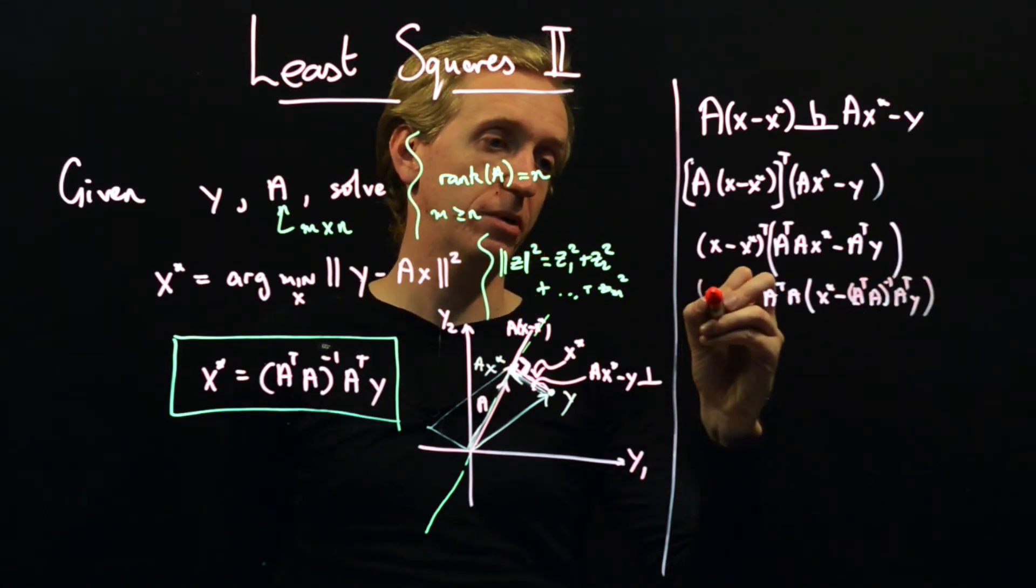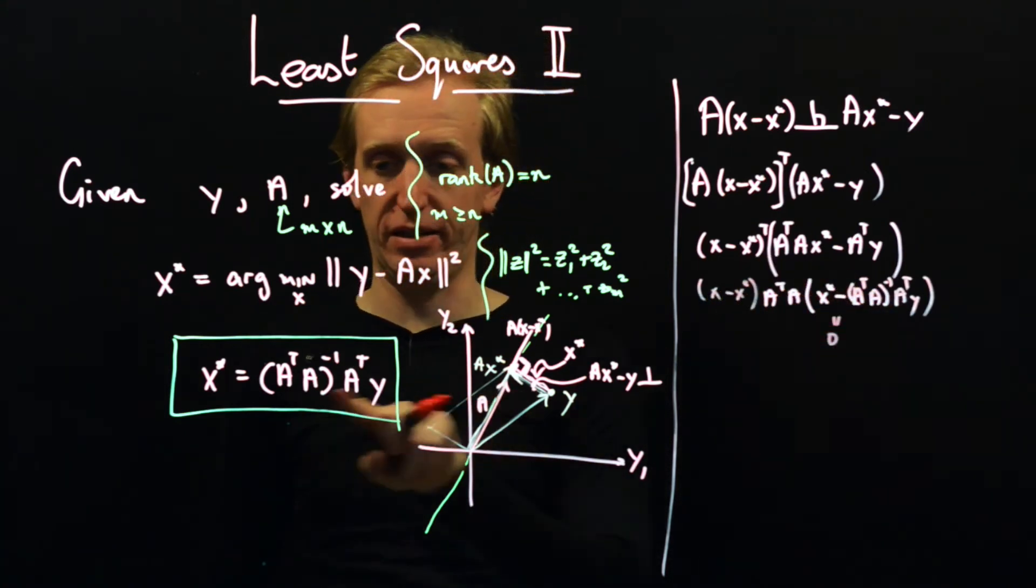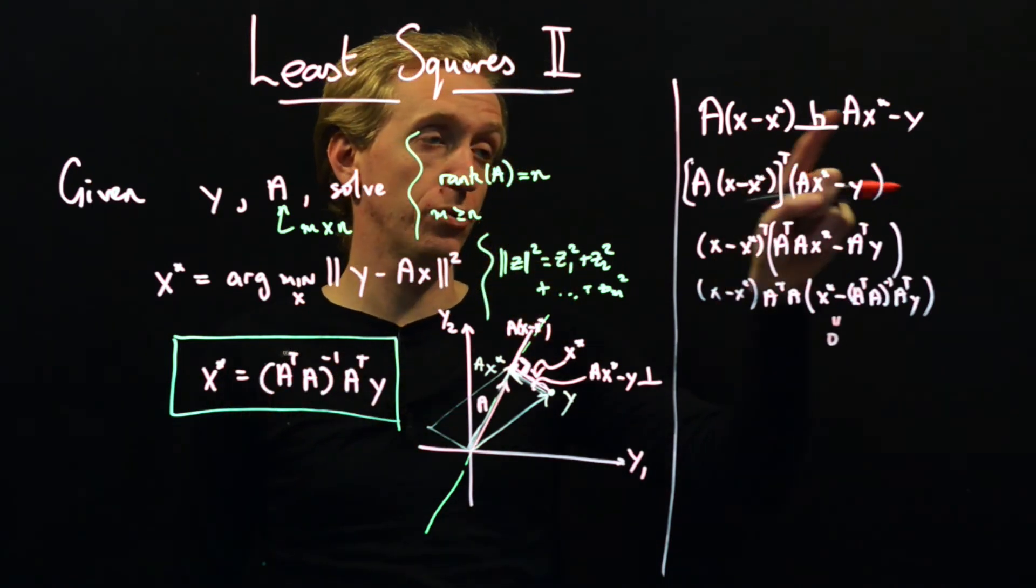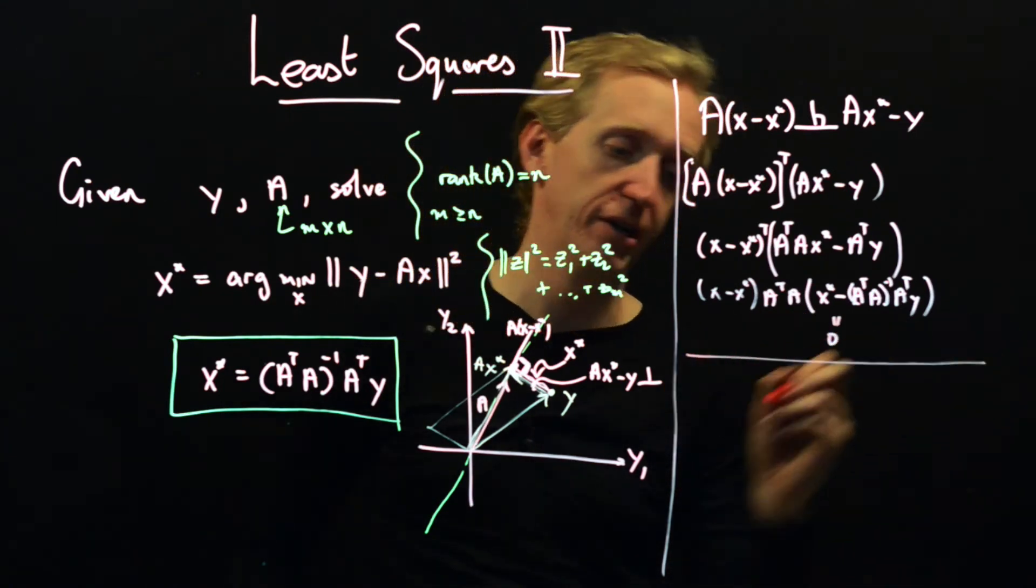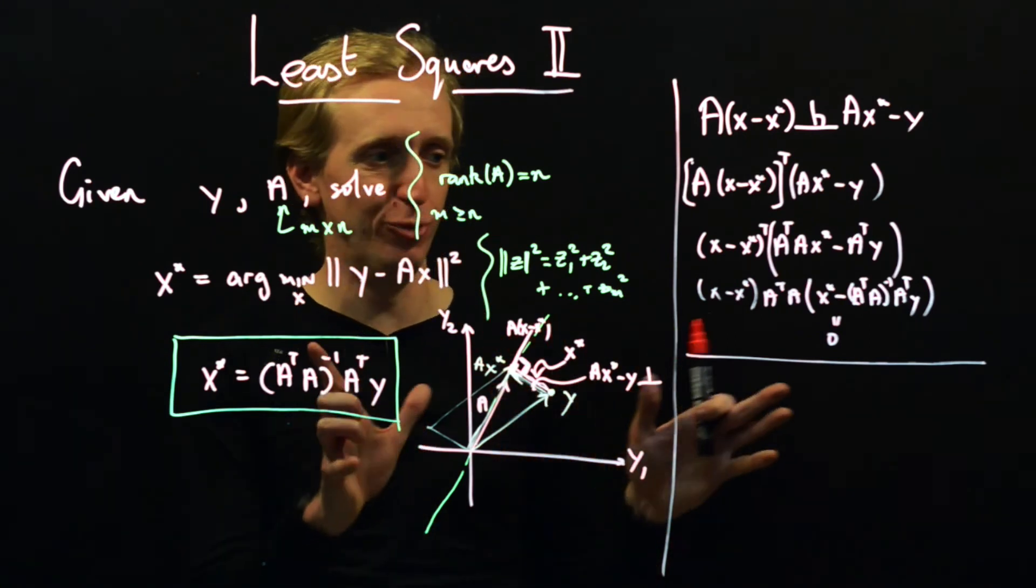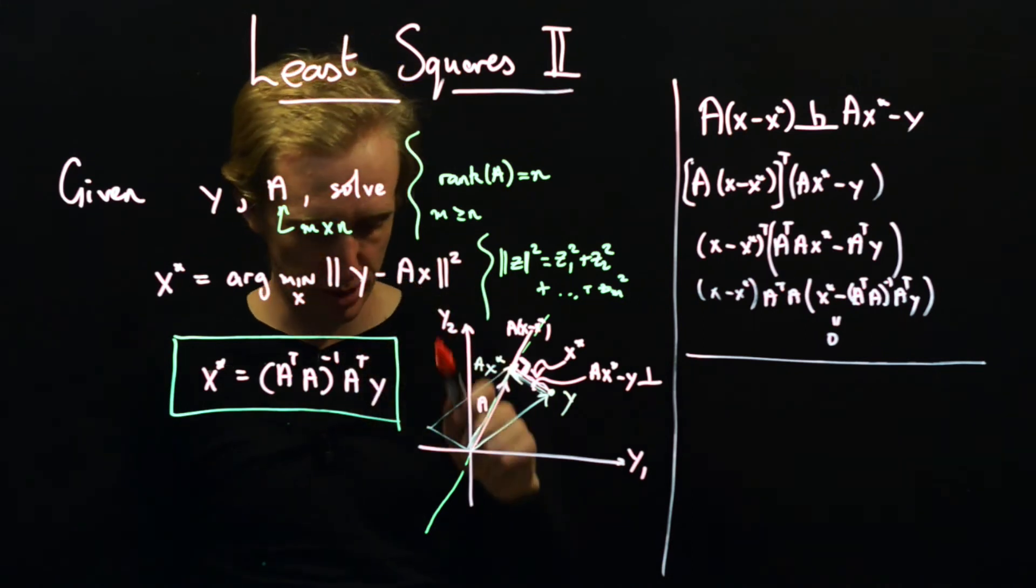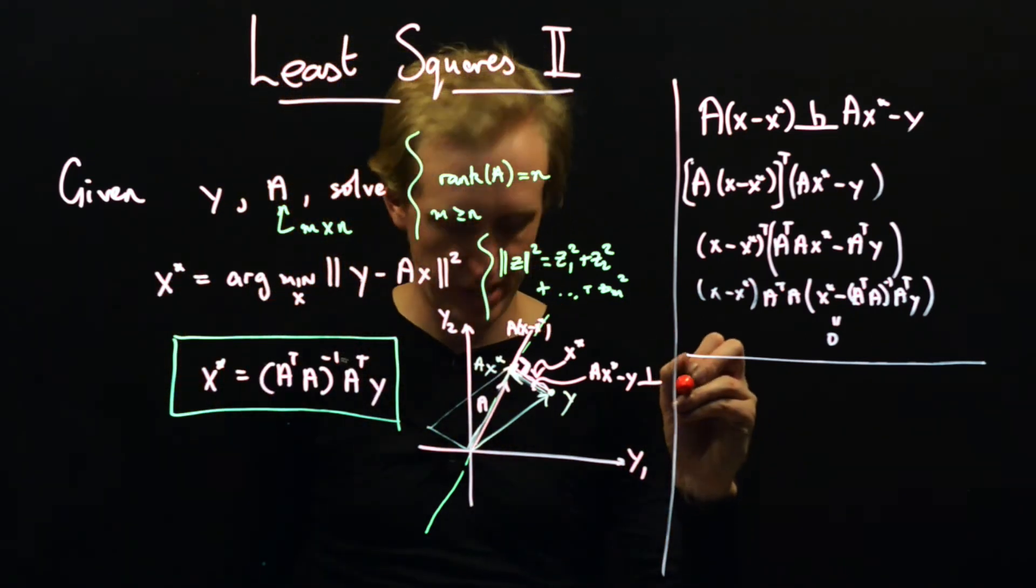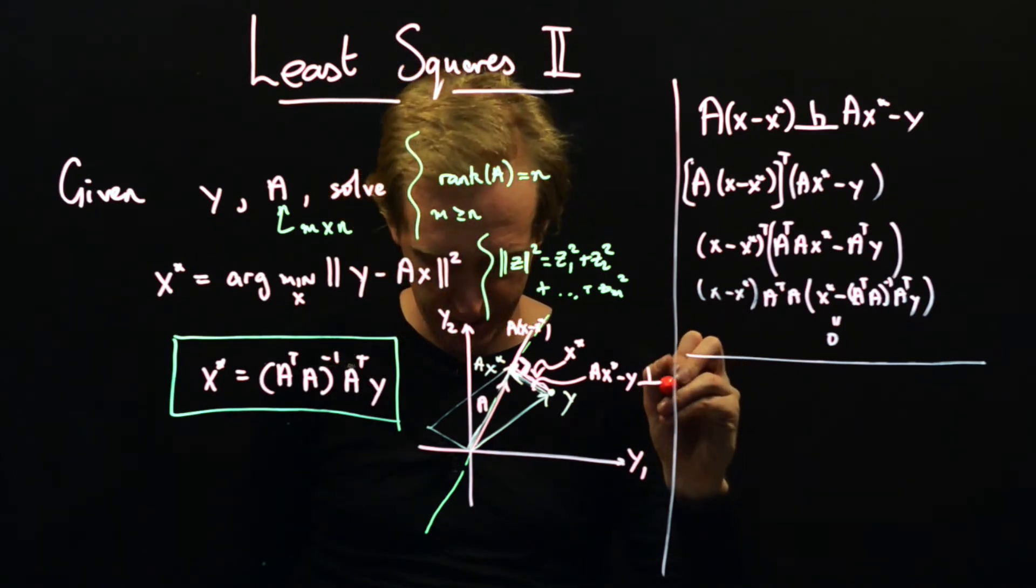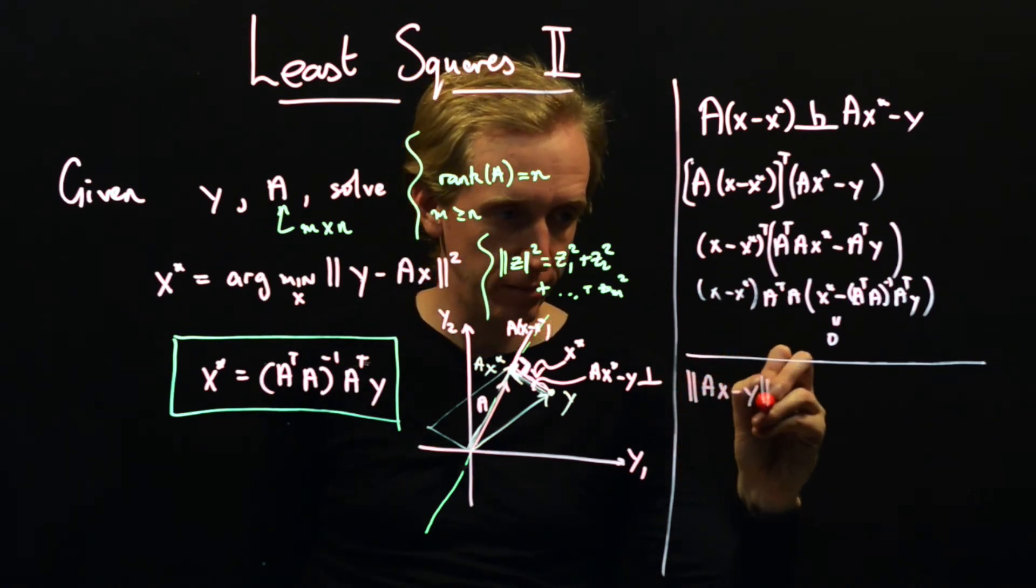This is precisely our optimal solution, x star. So we've verified this orthogonality condition, and so the final thing, I mean, we have already shown what we want to show, but let's just really convince ourselves by showing that this must be the minimizer of this expression. So given, just like last time, we'll just add things and subtract things away. So Ax minus y squared, so this is the thing that we want to minimize. I just swapped it around, I didn't realize I'd done that, but it doesn't matter.